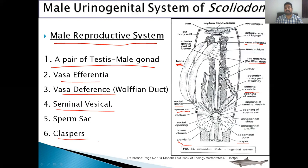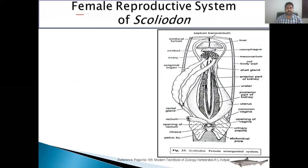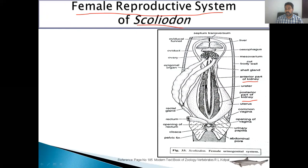Now let's see the female reproductive system of Squalus, and first discuss the excretory system. Here also it consists of a pair of kidneys. This kidney is again divided into two parts: anterior kidney and posterior kidney. In the case of the female, the anterior kidney does not have the duct of the reproductive system, and that's why we are discussing this separately as the female reproductive system. The anterior kidney here is also non-functional and is reduced, while the posterior kidney is the functional kidney. It contains uriniferous tubules, with the same structure as in the male, and these uriniferous tubules open into the ureter. This ureter comes down and joins to form a common duct, which opens into the urinary papilla.